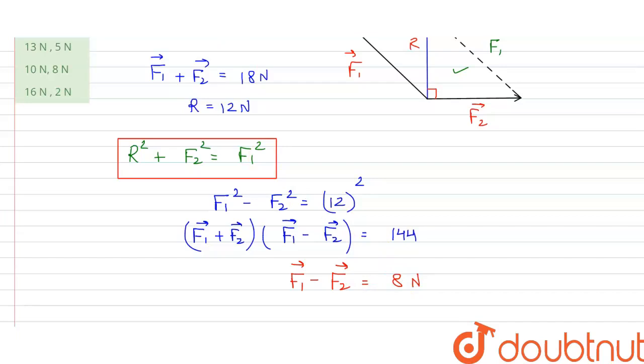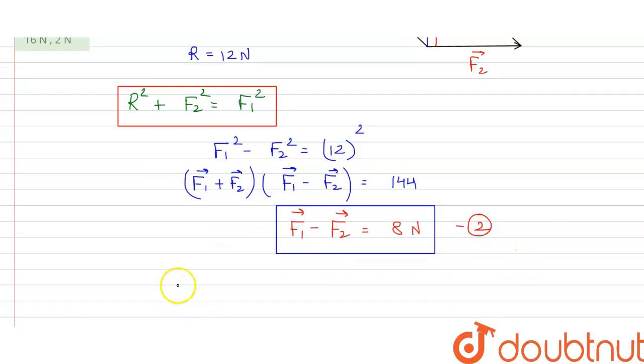So this is our value for F1 vector minus F2 vector. Now we have two equations: this is our equation 1 and this is our equation 2. So if we solve these two equations, that is F1 plus F2 equals 18 Newton and F1 minus F2 equals 8 Newton...